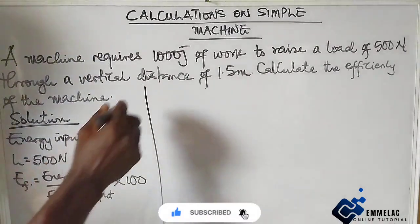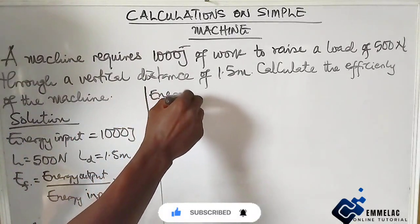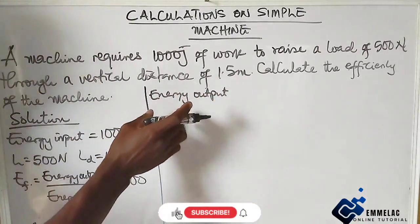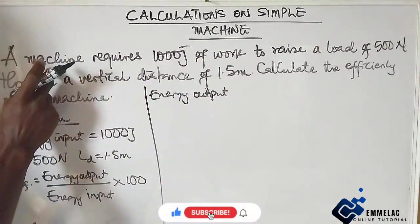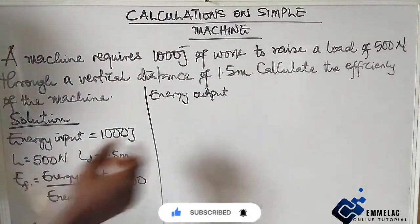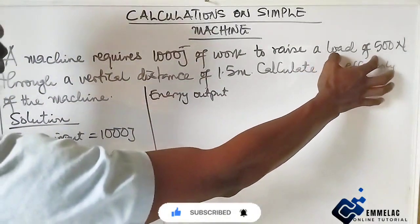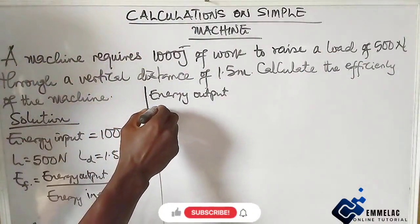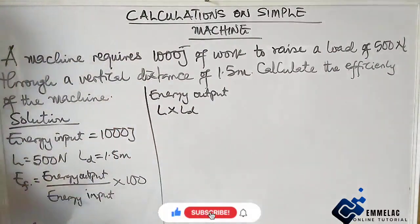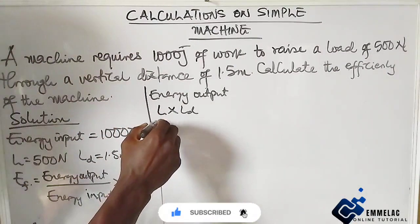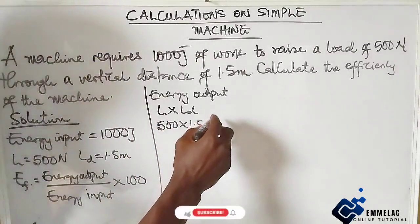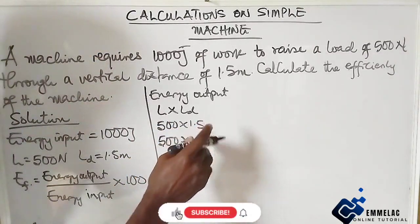For our output, to get the energy output, which means the outcome of this work, this is the load times the distance moved by load. So we have 500 times 1.5.